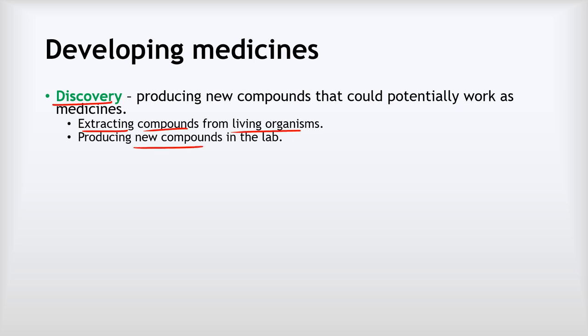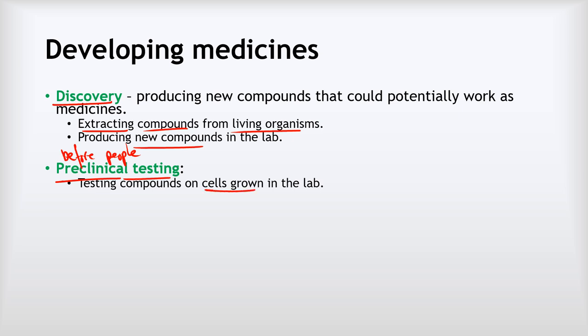Once we've got compounds that might potentially work, we're not just going to give them to people because that would be dangerous and expensive. So we have the preclinical testing stage — essentially testing before people. There are two aspects: first, testing compounds on cells grown in the lab, for example growing cancer cells on nutrient dishes and adding potential medicines to see the effect. If it shows a positive effect, the next stage is to test on live animals. This is controversial — scientists do it reluctantly, recognising that results can lead to real improvements in people's lives.